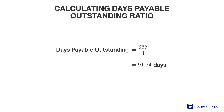Days payables outstanding would be 91.24, which means that it takes the company on average 91.24 days to pay suppliers for the goods purchased on credit.